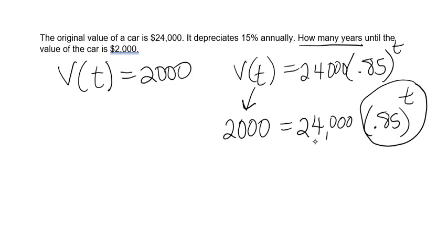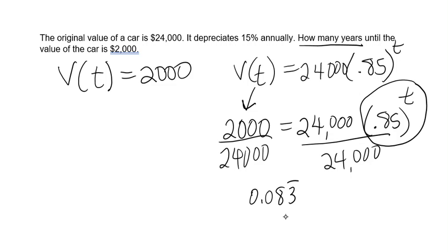Since that's being multiplied by 24,000, I can start off by dividing both sides by 24,000. 2,000 divided by 24,000 is 1/12th or 0.083 repeating equals 0.85 to the T power.